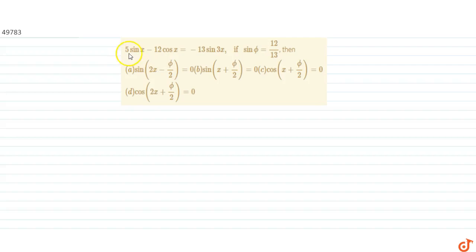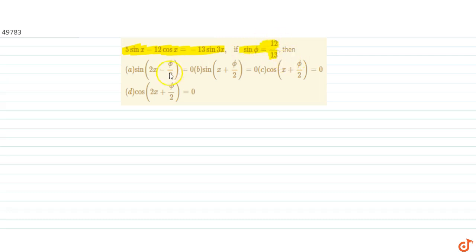In this question we are given: 5sinx - 12cosx = -13sin3x, and if sinφ = 12/13, then we have to find which of the following options is correct.